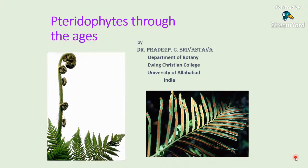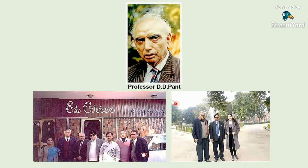As I told you, pteridophytes are generally feather-like plants and we call them ferns. You can see in this picture a frond showing circinate vernation in the young stage, with pinnately compound leaves, and the presence of sporangia on the abaxial surface of the leaves. Here I introduce you to my professor D.D. Pant, who was my doctoral guide. He was an authority on Glossopteris flora and cycads.